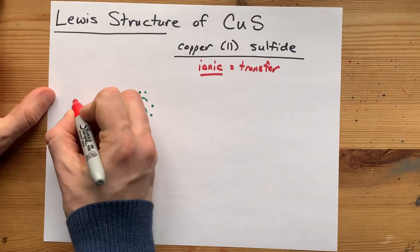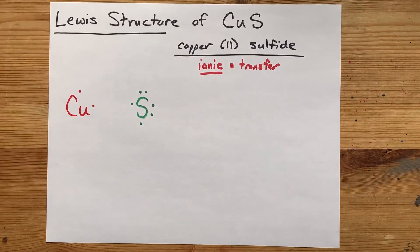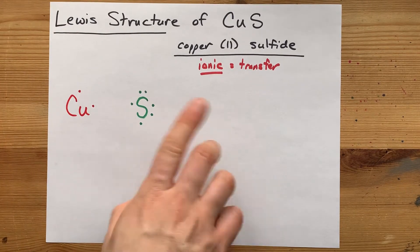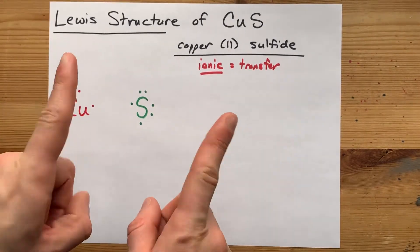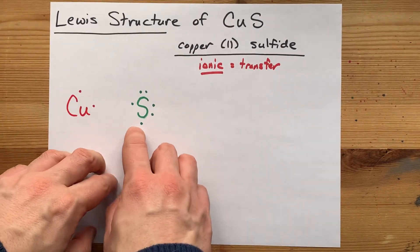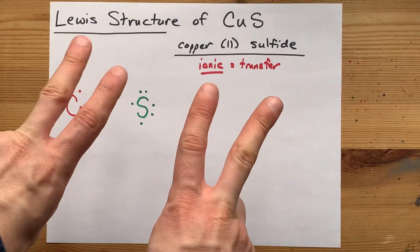So, draw yourself a copper with two valence electrons. Boom, boom. Now, the other thing to note is that non-metals always want a full valence shell. Most of the time, that's eight electrons. That's called the octet rule.